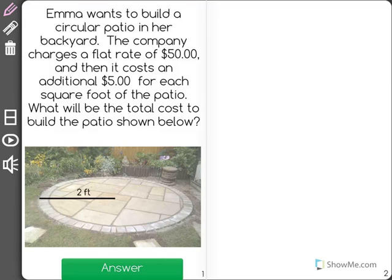Emma wants to build a circular patio in her backyard. The company charges a flat rate of $50, and then it costs an additional $5 for each square foot of the patio. What will be the total cost to build the patio shown below?